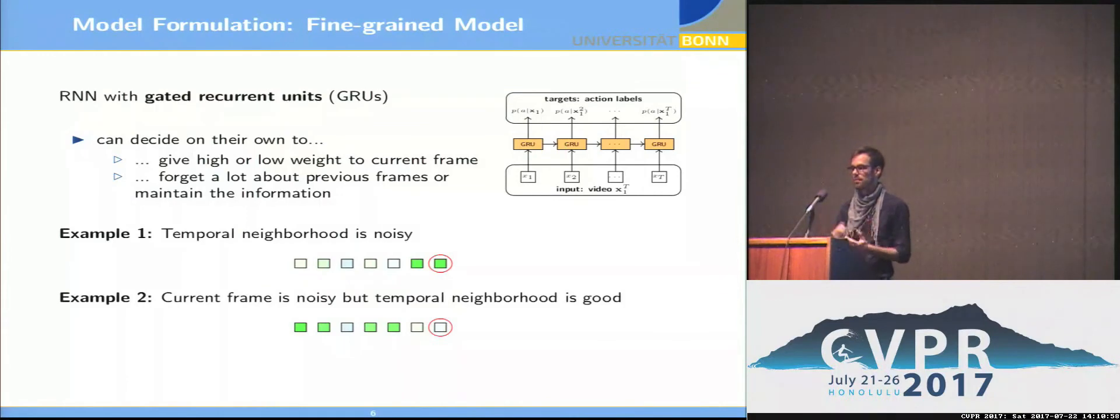But we have another example where a frame-wise model would fail. Here the example is quite noisy. It's not clear to say to which action class it would belong, but from the temporal context it's pretty obvious that it should be the green class. So the gated recurrent unit can now say I put a high emphasis on the temporal context and still get a high response for the correct action class.